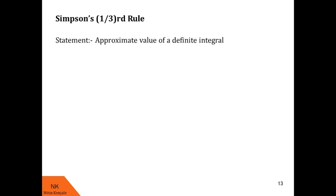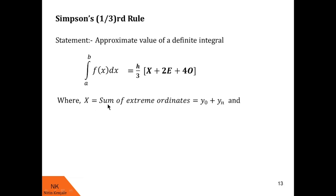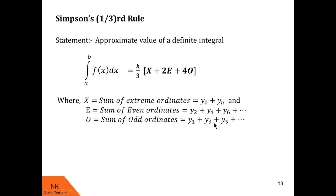Let us see its statement. It states that the approximate value of a definite integral of f(x)dx over the limit a to b, when interval a to b is divided into n equidistant intervals, is given by h/3 into (X + 2E + 4O), where X is the sum of extreme ordinates that is y₀ + yₙ, E is the sum of even ordinates that is y₂ + y₄ + y₆ and so on, O is the sum of odd ordinates that is y₁ + y₃ + y₅ and so on, and h is (b minus a) upon n.